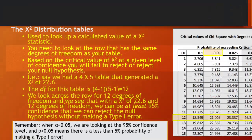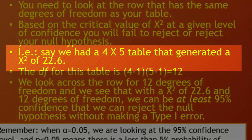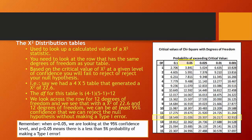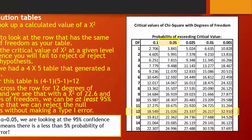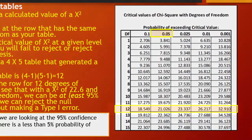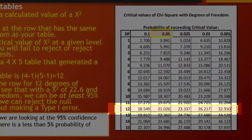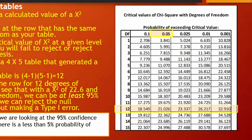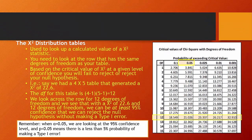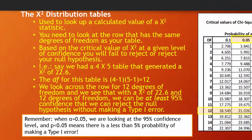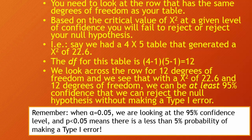Say we had a four-by-five table and generated a chi-square statistic of 22.6. The degrees of freedom = (4 − 1) × (5 − 1) = 12. Looking across the row for 12 degrees of freedom, our calculated chi-square of 22.6 is larger than 18.549 and larger than 21.026, but not larger than 23.337. That tells us we can be at least 95% confident that we can reject the null hypothesis, with less than a 5% probability of making a type 1 error.